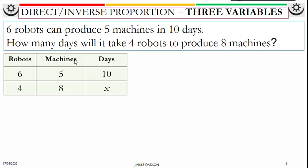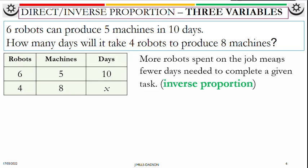We're going to see the relationship between days and machines, and days and robots. More robots spent on a job means fewer days needed to complete a given task. So that's inverse. Days going up, robots must go down.